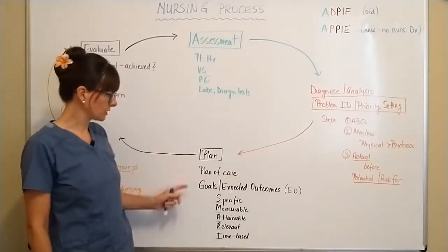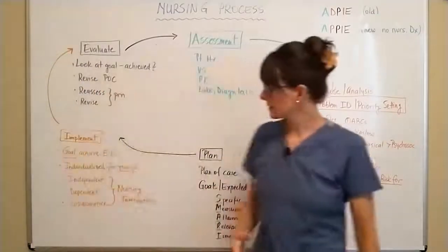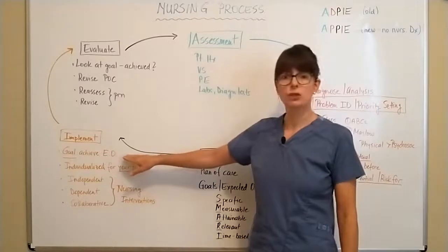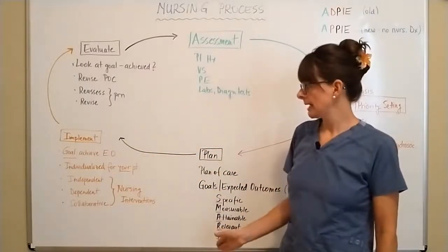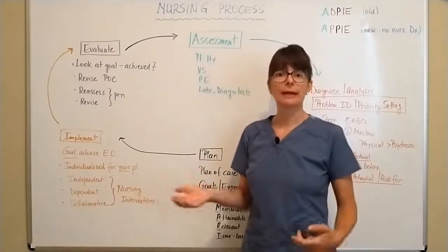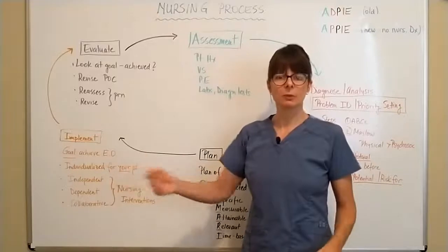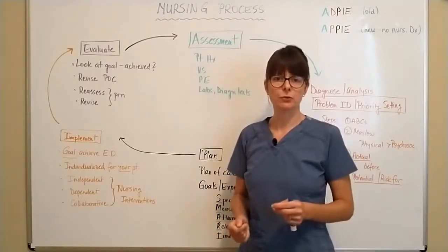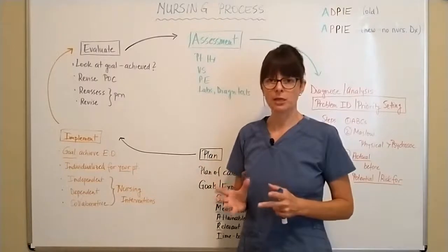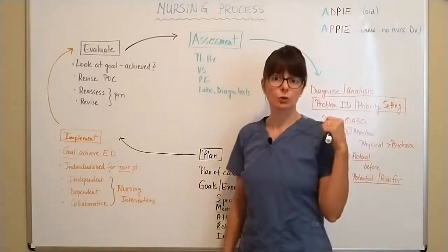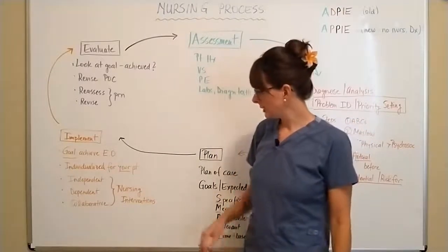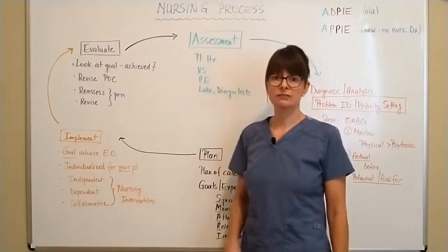Once you've identified goals and expected outcomes and planned your priorities, you move into the implementation phase. The goal of implementation is to achieve the expected outcome we've formulated, and it must be individualized for your patient. Two patients admitted for a knee replacement might not have the same goals — one might be three days post-op and the other just coming out of surgery, so priorities will be very different. There is no cookie-cutter recipe you can apply; it must be individualized. For interventions, we have independent, dependent, and collaborative interventions.